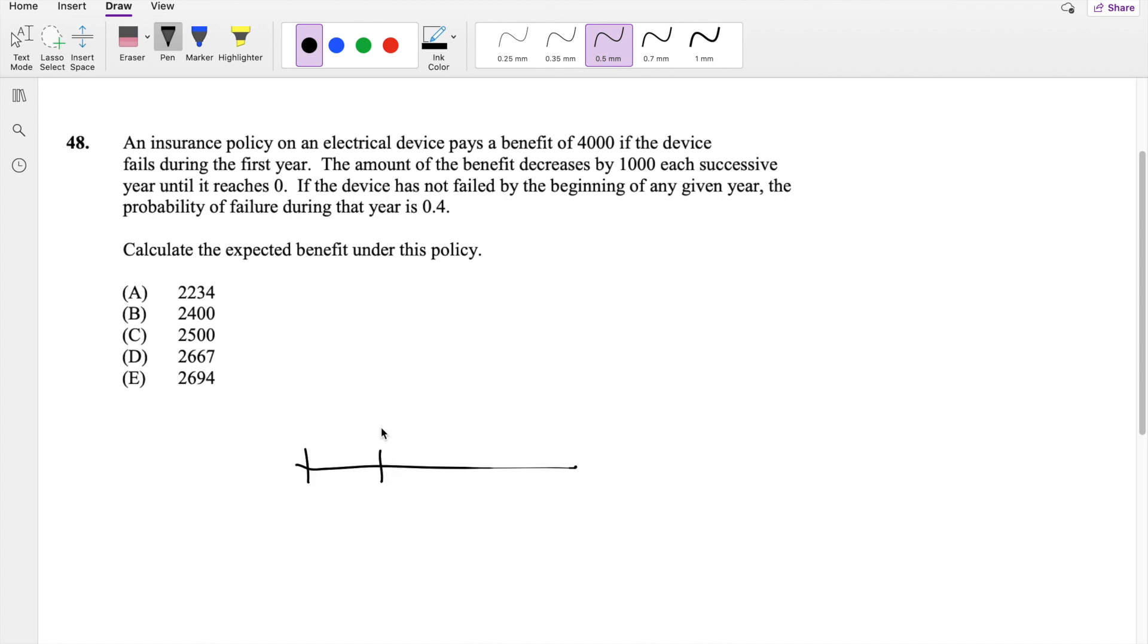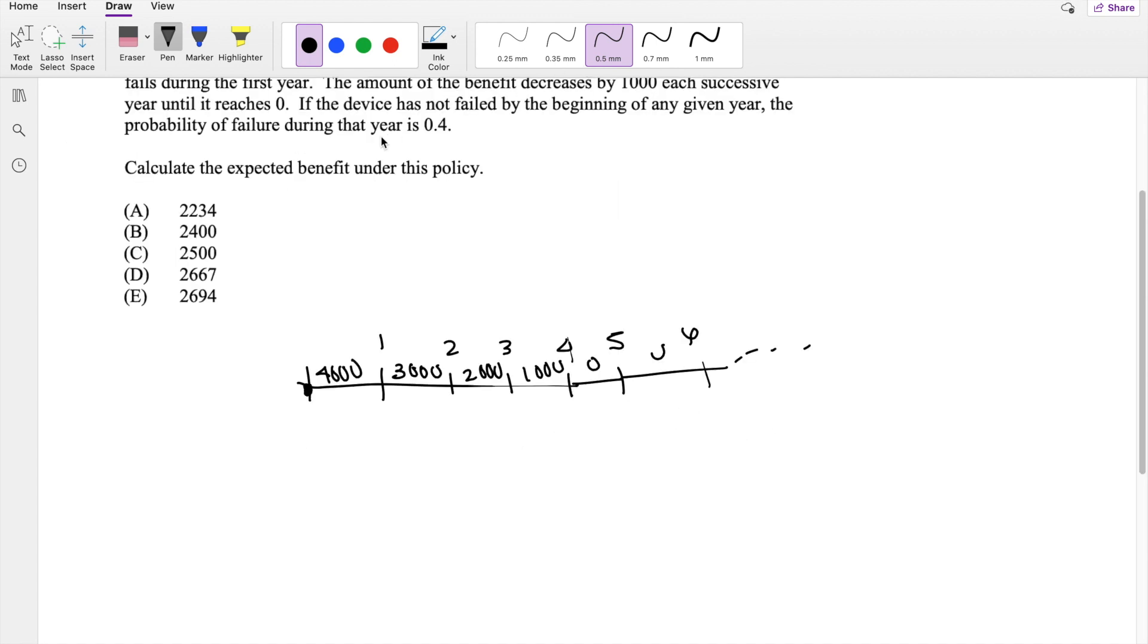So if this is the first year, they pay $4,000. And the amount of the benefit decreases by $1,000 each year until it reaches $0. So in year 2, they're going to pay $3,000. In year 3, they're going to pay $2,000. Year 4, they're going to pay $1,000. And in year 5, they pay $0, and in year 6, they're going to pay $0, and so on. They say, if the device has not failed by the beginning of any given year, the probability of failure during that year is 0.4. And you only get this money if the device fails.